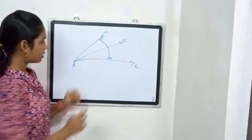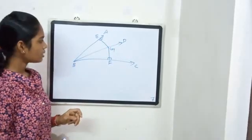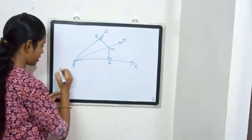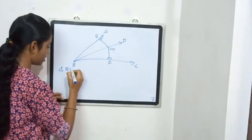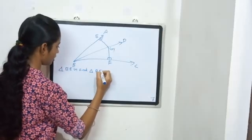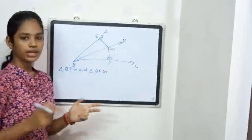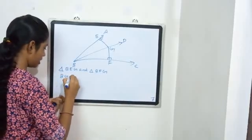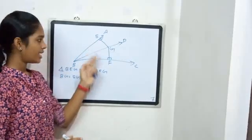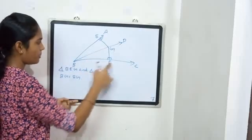I will find triangle BEG and triangle BFG — these two triangles. BG equals BG; in these two triangles, BG is common.